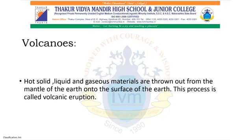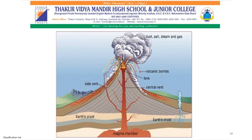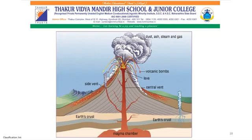Now let us see the effect of sudden earth movements in the form of volcanoes. A volcano is when hot, solid, liquid and gaseous materials are thrown out from the mantle onto the surface of the earth — called volcanic eruption. The first type is a central type or conical volcano. During this eruption, molten magma or lava comes out through a pipe-like vent inside the earth's surface. Through the vent, ash, dust, steam and gases come out. The lava spreads around the mouth of the vent and cone-shaped mountains are formed.